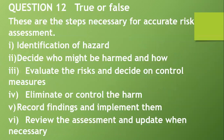Please, I hope you've subscribed, commented, liked, and shared — these are free resources, help us keep this alive. Question twelve: True or false — these are the steps necessary for accurate risk assessment: one, identification of hazard; two, decide who might be harmed and how; three, evaluate the risk and decide on control measures; four, eliminate or control the harm; five, record findings; six, review the assessment and update when necessary. True.